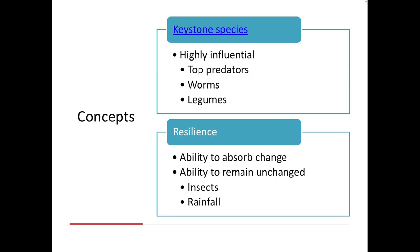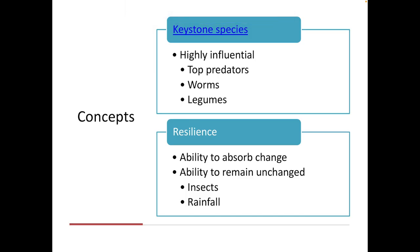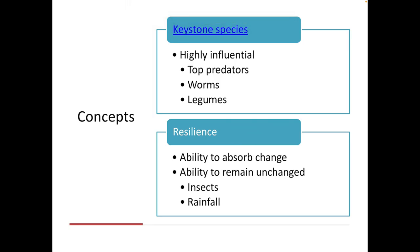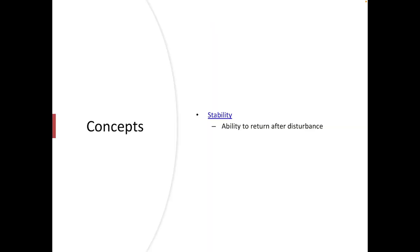Resilience is the ability to absorb change. When we say the ability to remain unchanged, we recognize that these systems change over time, but it's the ability to come back and behave as a somewhat natural area after a natural disaster — if an insect comes in and wipes something out, can populations adapt? Stability is the ability to return after that disturbance. But the question is: what are we returning to? Are we returning to what it was, or to something else? These things are really hard to define.